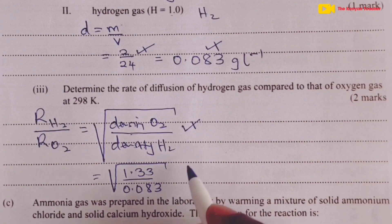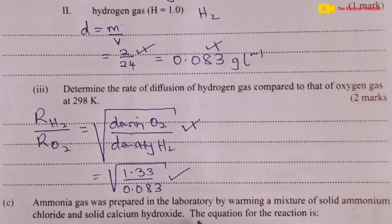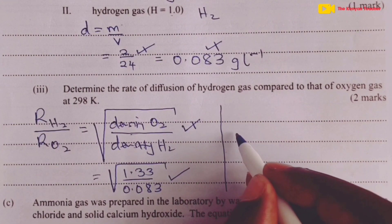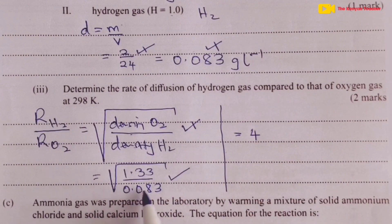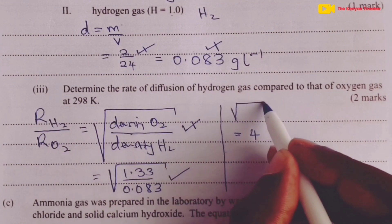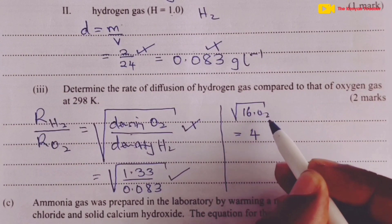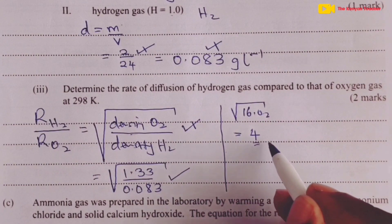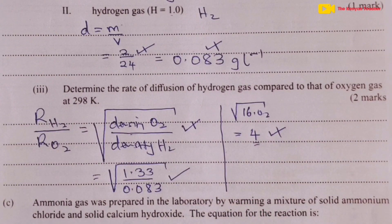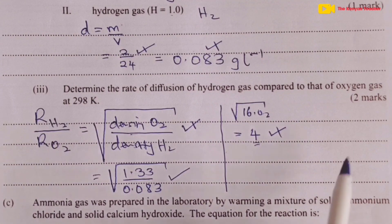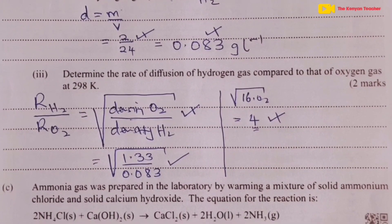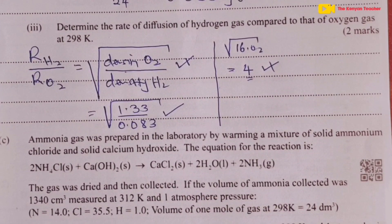The substitution earns one whole mark. Working it out: √(1.33/0.083) = √16.02 ≈ 4, earning the last mark — without units. This means hydrogen diffuses four times faster than oxygen. That is how the question was expected to have been answered.